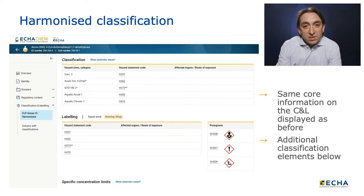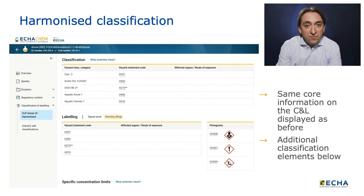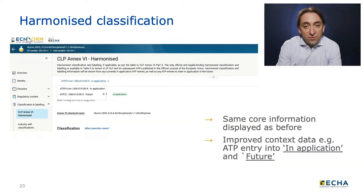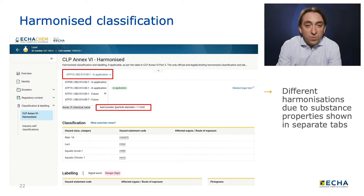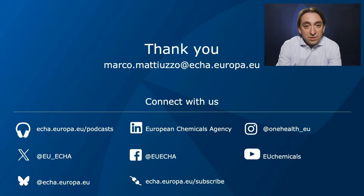Scrolling down the ATP information, the CLP harmonized classification of the substance can be seen. Further down the page, additional classification elements such as specific concentration limits, M-factors, and acute toxicity estimates are provided, if relevant and available. In certain cases, a substance may have multiple harmonized classifications — for example, due to variations in the form of the substance. In this case, you will see several classifications that are marked 'in application.' An example of such a substance is lead. Lead has a harmonized classification for the massive form with a particle diameter above 1 mm, and another one for the powder form with particles measuring less than 1 mm in diameter.